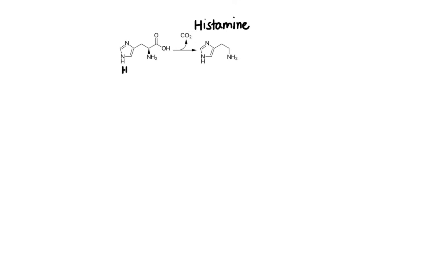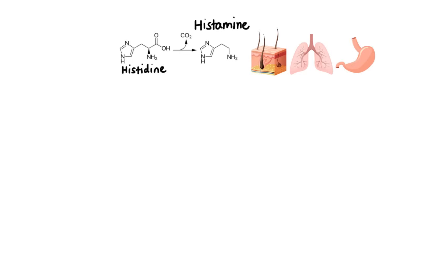Histamine is a small molecule produced in our bodies by decarboxylation of the amino acid histidine. It is widely distributed throughout all tissues but is particularly concentrated in the skin, lungs, and gastrointestinal tract. Most of histamine is generated and stored within granules in mast cells located within tissues, basophils and eosinophils circulating in the blood, and enterochromaffin-like cells located in the stomach lining.